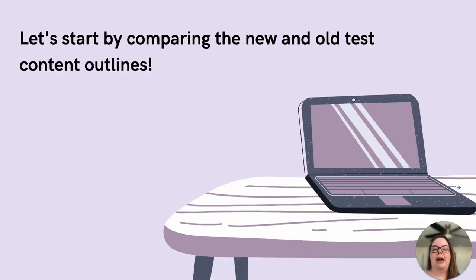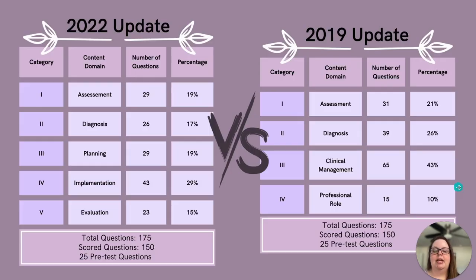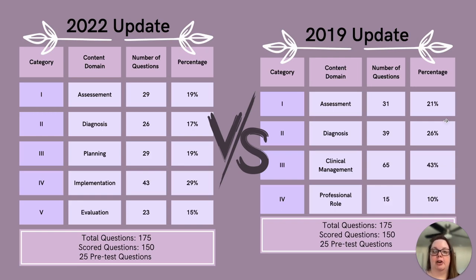We'll start off by comparing the new and old test content outlines. The biggest change noted in this new outline is a changing of content domains. In the 2019 version, we had a total of four content domains, including assessment, diagnosis, clinical management, and professional role. In the 2022 update, we now have five content domains: assessment, diagnosis, planning, implementation, and evaluation.